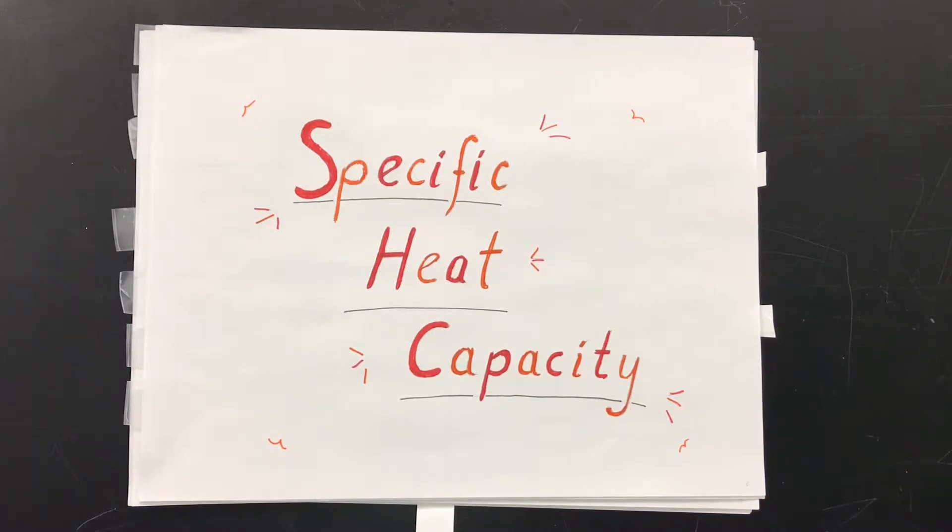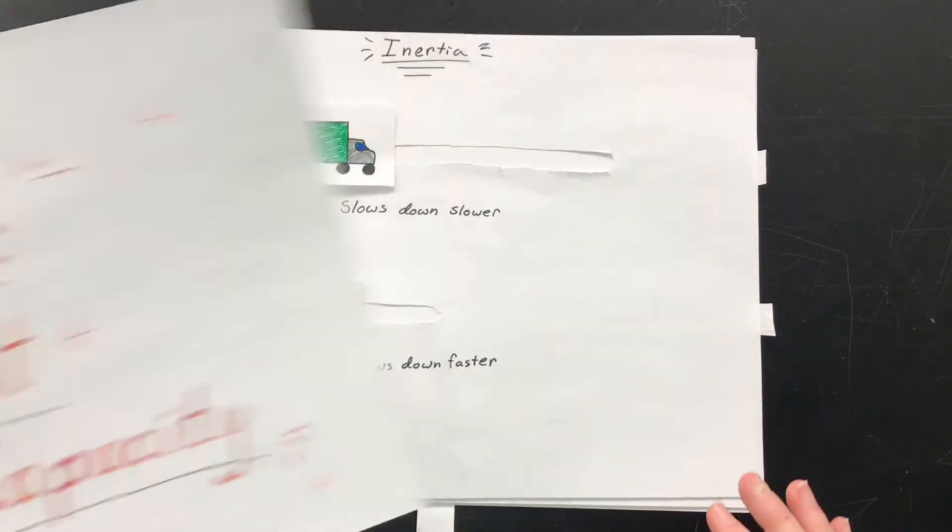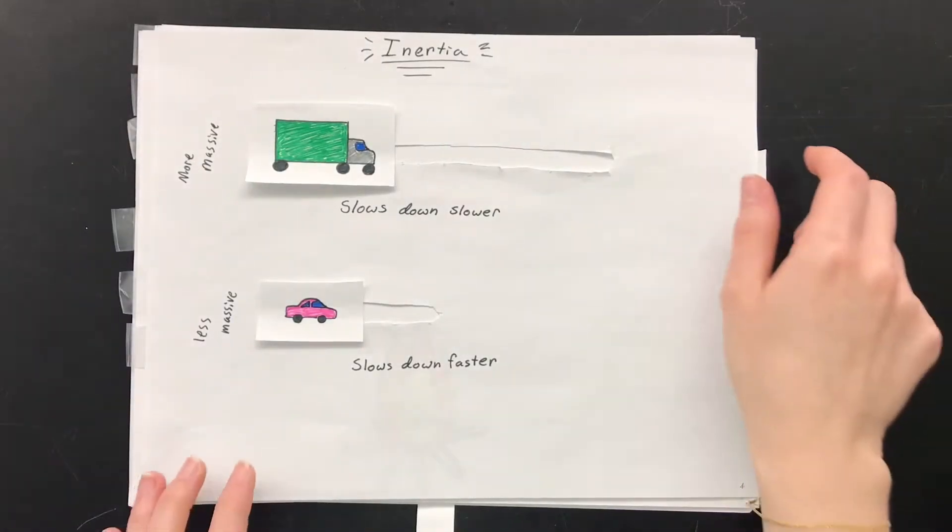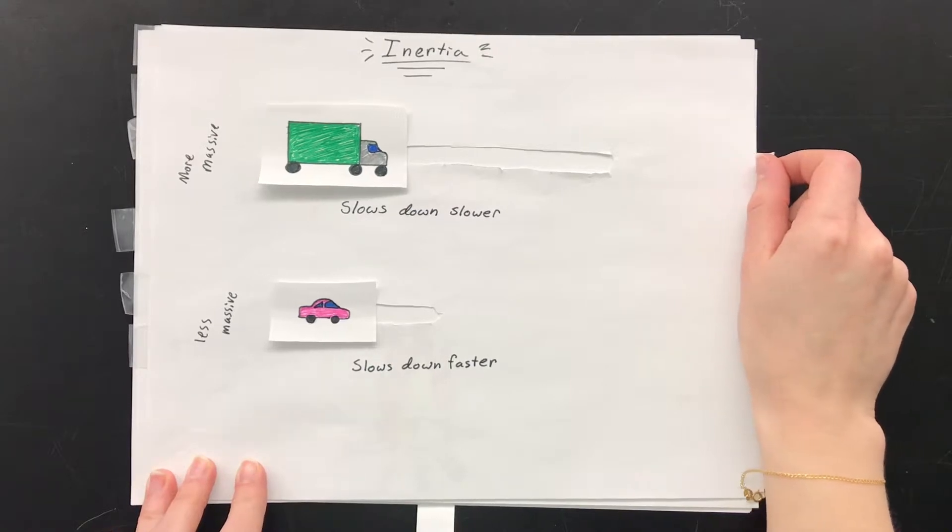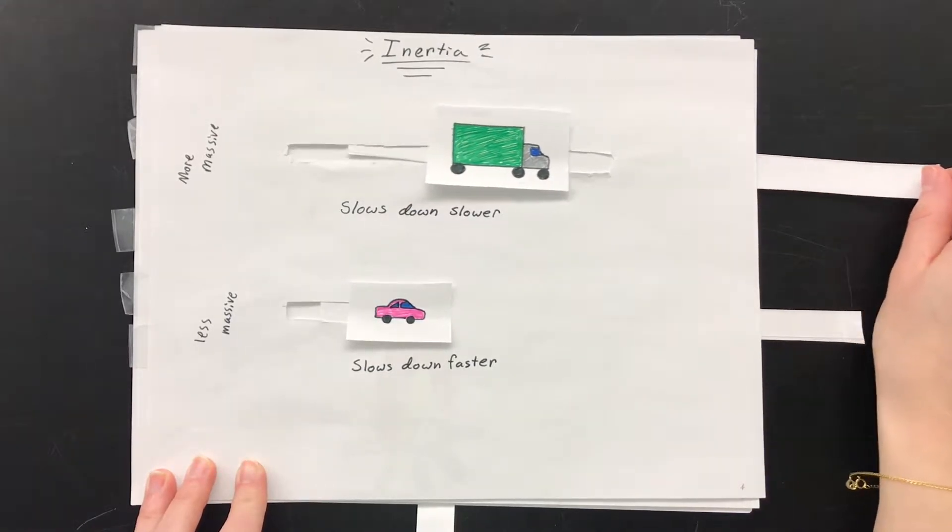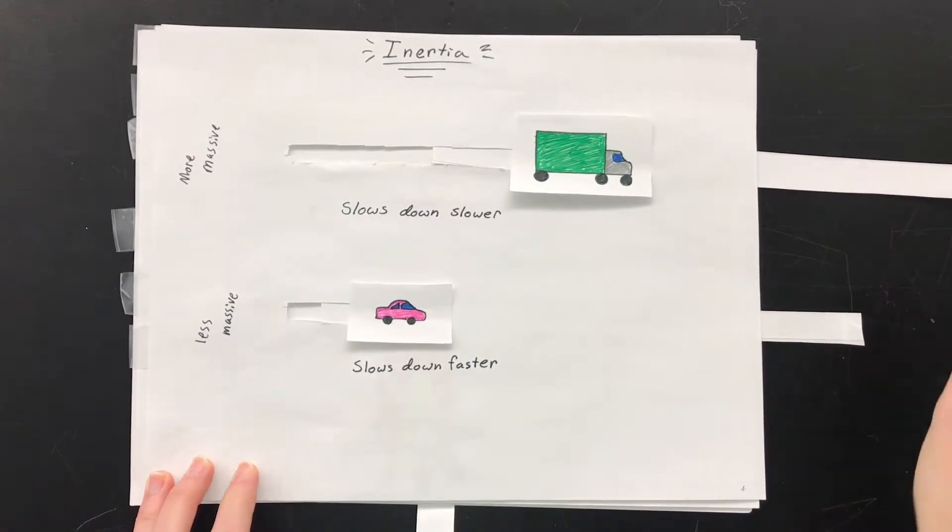You know, inertia. Objects in motion tend to remain in motion and objects at rest tend to stay at rest. Well if we consider these kinds of mechanical systems, we know that for two objects moving at the same speed, the more massive object has more inertia and will therefore take much longer to slow down than the less massive object.